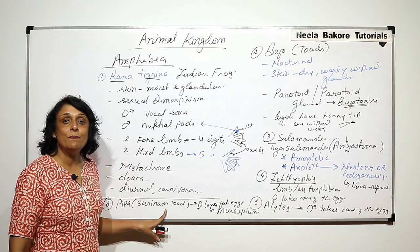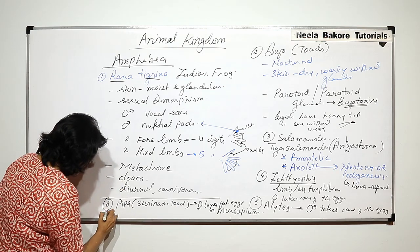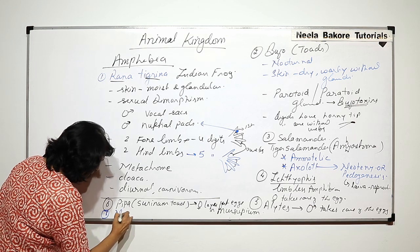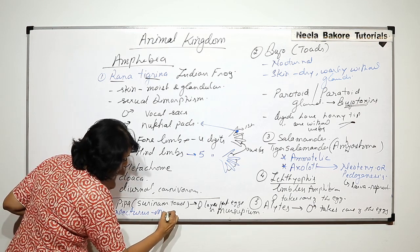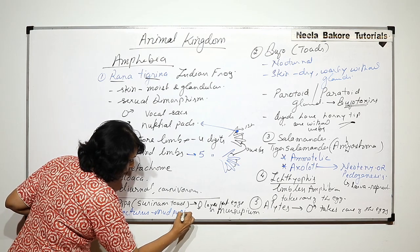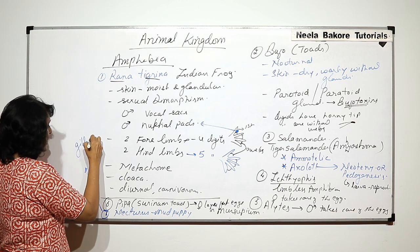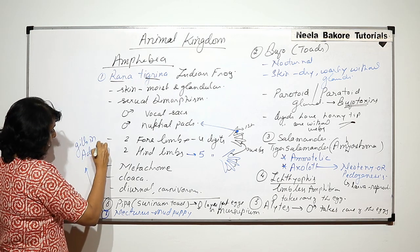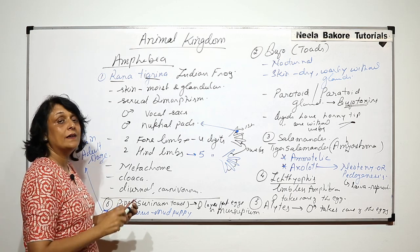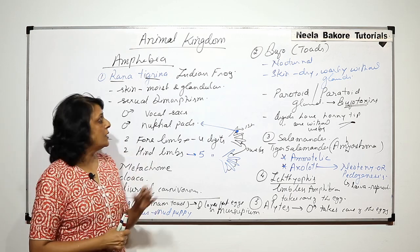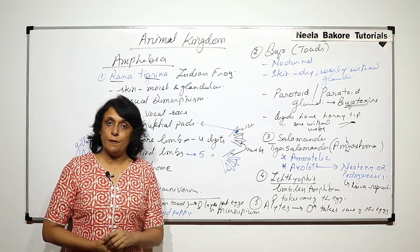One more example is Necturus, commonly known as the mud puppy. The unique feature of the mud puppy is that it retains gills in the adult stage — even the adults have gills. These are some interesting examples of the class Amphibia.